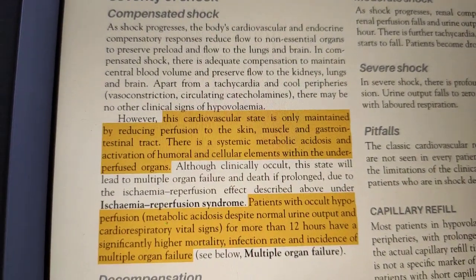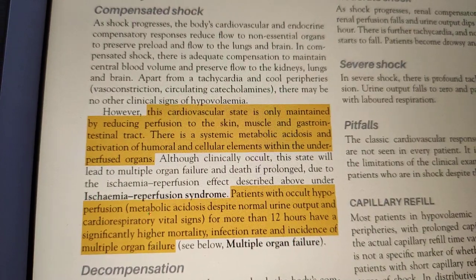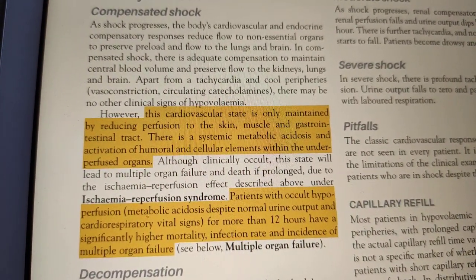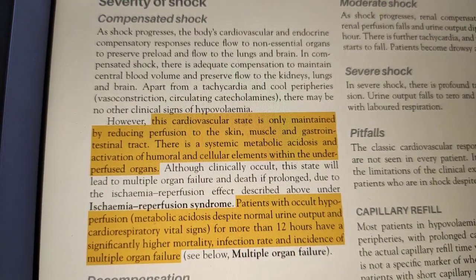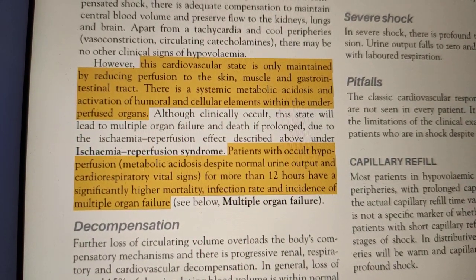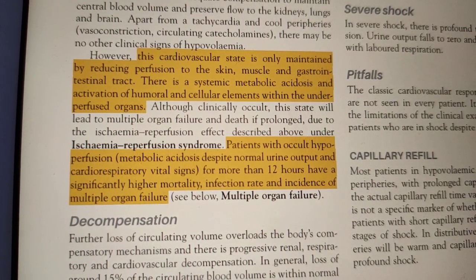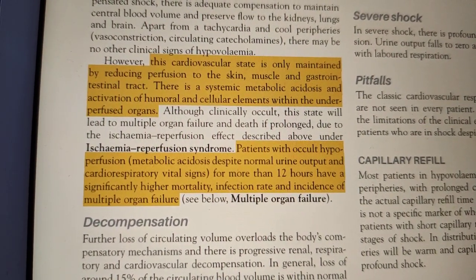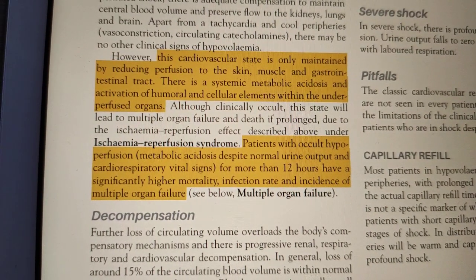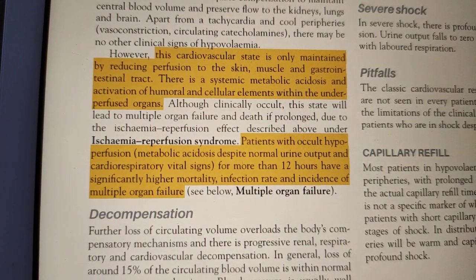The severity of shock can be classified as compensated or decompensated. In compensated shock, the body compensates using catecholamines, increasing heart rate, stroke volume, and vasoconstriction, directing blood supply toward essential organs — brain, kidney, lungs — away from non-essential ones. However, blood supply to the gut, muscles, and skin is reduced. If this continues, occult shock occurs where perfusion is maintained to essential organs but not to others, leading to ischemia-reperfusion injury.